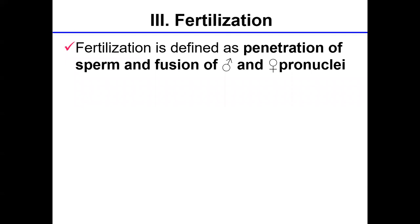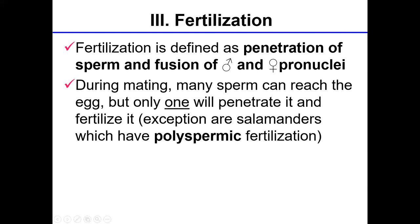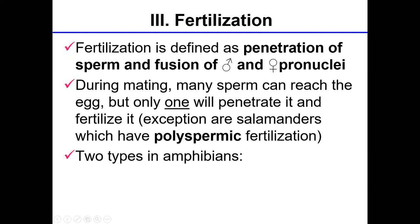Fertilization is the penetration of sperm and fusion of male and female pronuclei, restoring the diploid or 2N condition. Males produce millions of tiny spermatozoa, whereas females produce far fewer ova — hundreds or thousands — because eggs are much larger than sperm and much more energetically costly to produce. During mating, many sperm can reach the egg's surface but only one will penetrate the cell membrane and fertilize the egg. An exception found in salamanders is polyspermic fertilization. Sperm have enzymes in their acrosomes that digest egg membranes, making a tiny hole; the sperm pronuclei then move into the cytoplasm, the ova completes its final meiotic division, and the two pronuclei fuse to form a zygote.